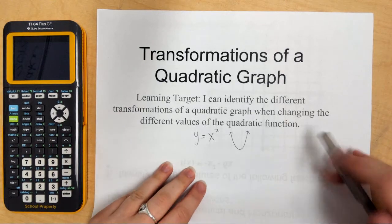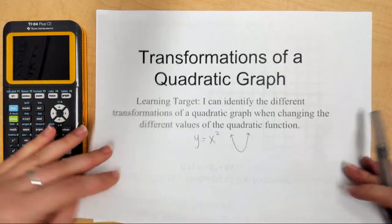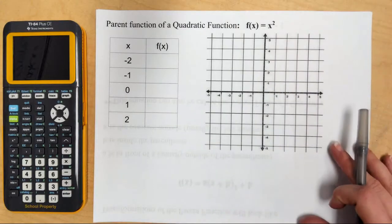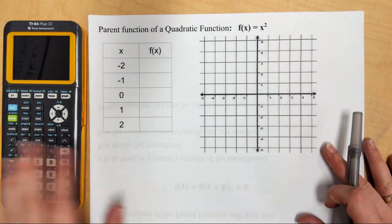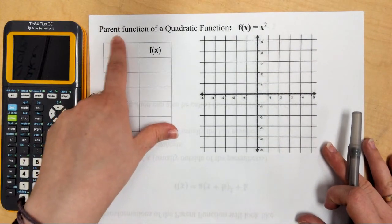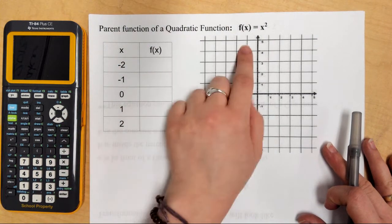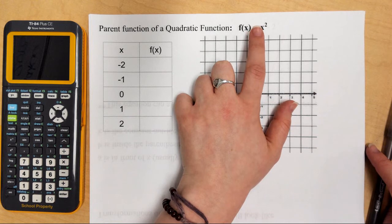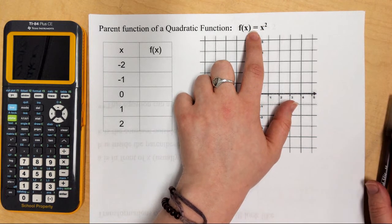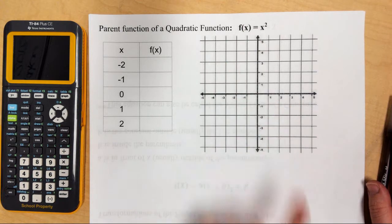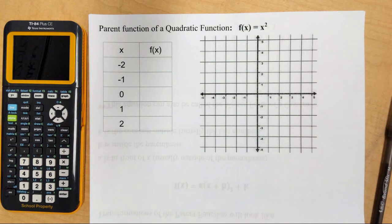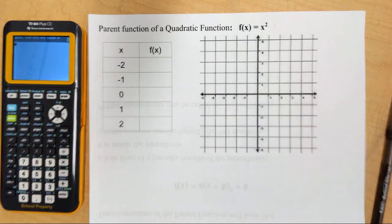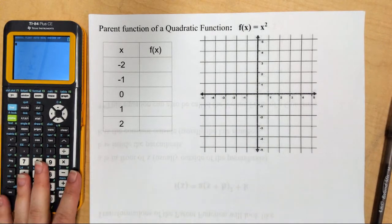We are going to start with this. I need you to write this down. Our parent function of a quadratic is f of x equals x squared. This is the most basic quadratic function — it is as plain and as boring as it could possibly be. We are going to graph it, and I'm going to use my calculator to help us. Make sure you have a calculator.